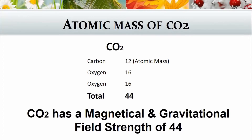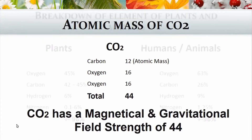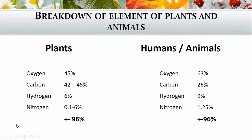That's a different way of saying the atomic mass — more the field strength of the CO2. When we have a look at the breakdown of the elements of plants and animals, plants are composed of oxygen, carbon, hydrogen, and nitrogen — roughly about 96 percent. These percentage ratios will vary from plant to plant, but that's the general guideline. When you look at humans and animals, we are also composed of oxygen, carbon, hydrogen, and nitrogen — around 96 percent. That's all that we are made up of.